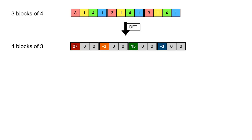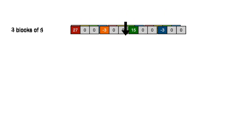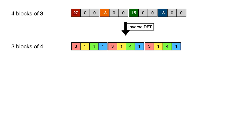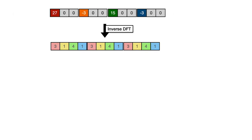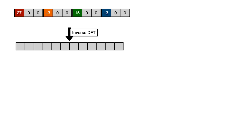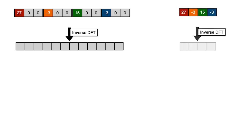The second reason why the DFT of a periodic sequence looks like blocks is shown by flipping things around and using the inverse DFT. Recall: the inverse DFT is calculated the same way as the DFT, except instead of rotating clockwise you rotate counterclockwise, and then you divide by the total number of entries, which is 12. I'm going to look at the sequence of pivots — 27, minus 3, 15, and minus 3 — and compute the inverse DFT, comparing it to the shorter sequence on the right.